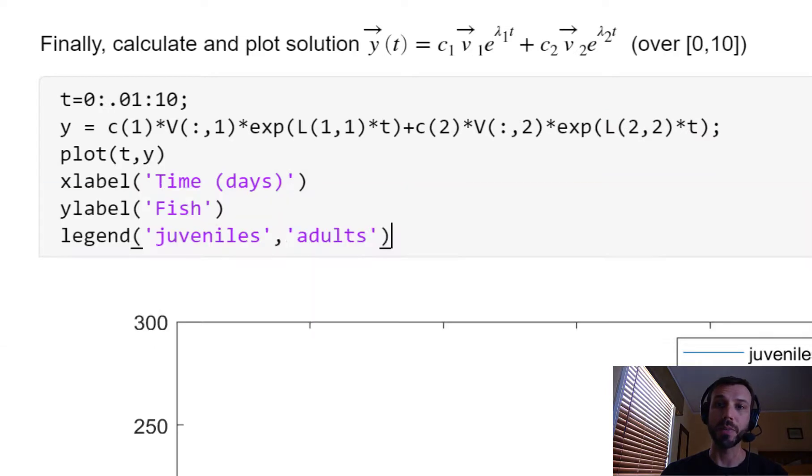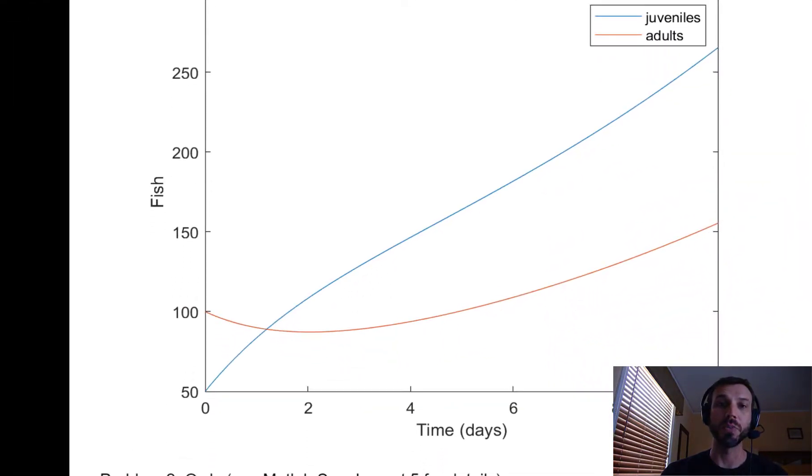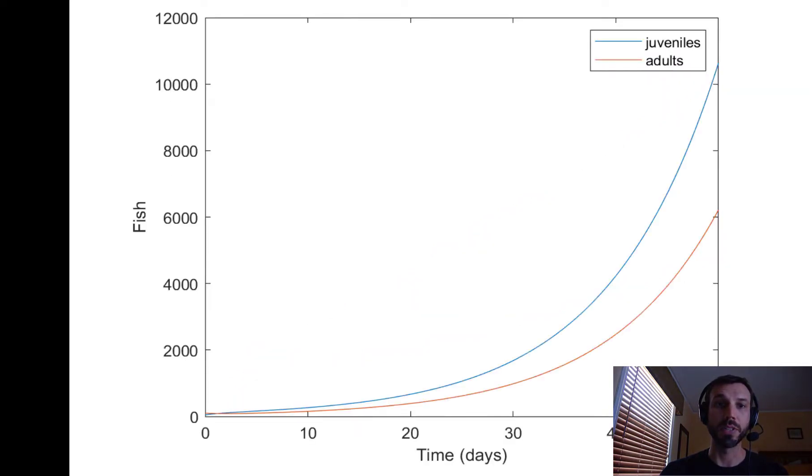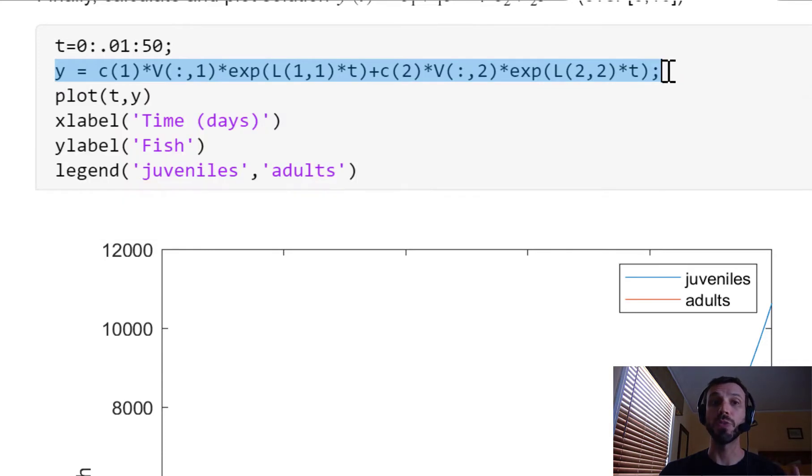After doing a plot with some labels and legend, we can see that we get a graph very similar to the one that you probably got back on the homework assignment, where the juveniles and the adults do experience this growth. In fact, if you increase the time interval to time 50, you can see this more clearly in the sense that now you can really see them start to take off exponentially fast, and all that is because that first eigenvalue was positive. Note that both the juveniles and the adults grow, not just one or the other, even though the other eigenvalue is negative, and that's because when we're forming the solution y here, both rows will have a positive exponential function in them.